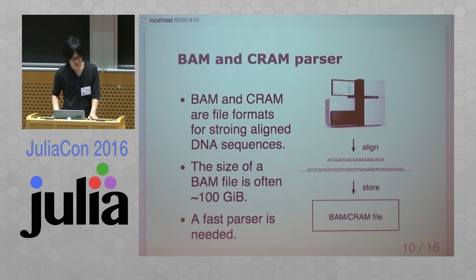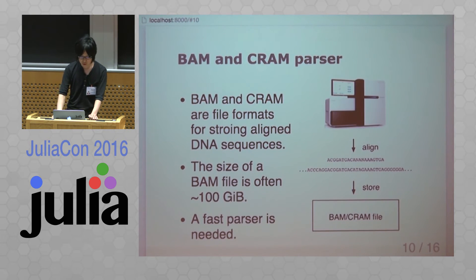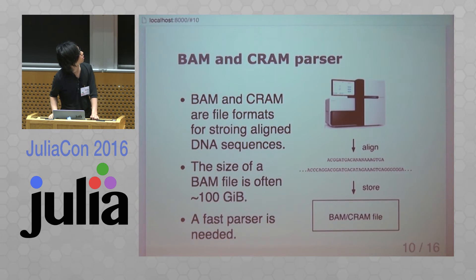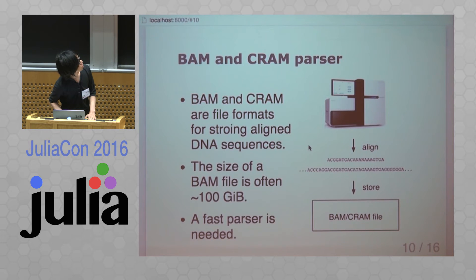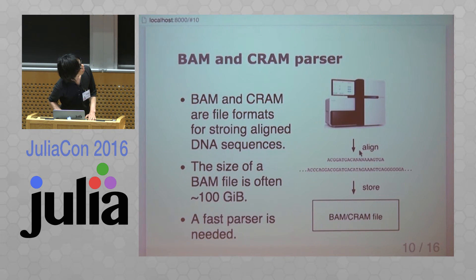BAM and CRAM are file formats for storing aligned DNA sequences, which are generated from a sequencing machine and mapped to a reference genome.